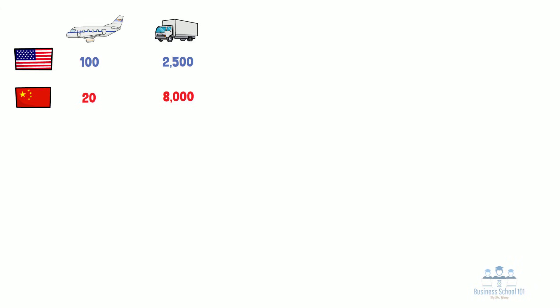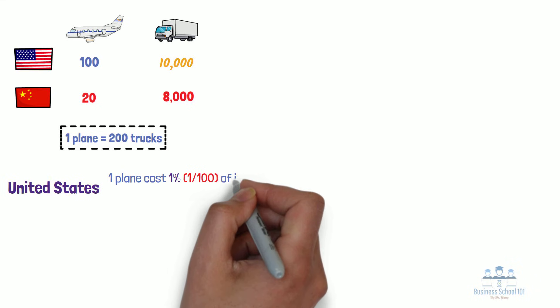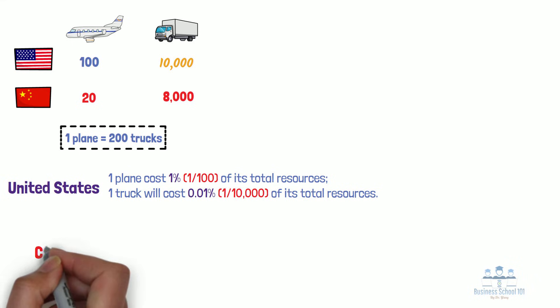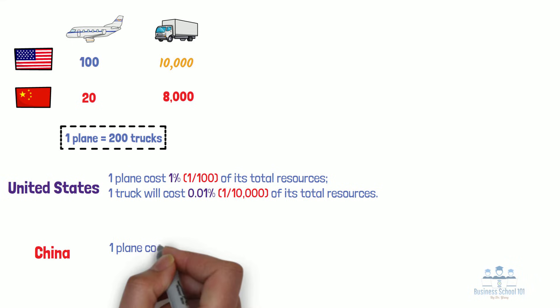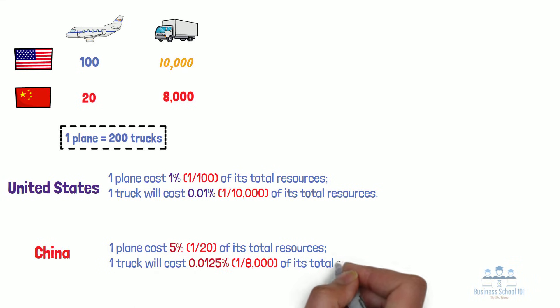Let's use an example to explain. This time, let's assume that there are only two countries, the United States and China, engaging in trade, and that both countries only produce two goods: planes and trucks. China can still produce either 20 planes or 8,000 trucks. However, this time, the United States can either produce 100 planes or 10,000 trucks. In this imaginary international market, one plane can still be traded for 200 trucks. For the United States, the production of one plane will cost 1% of its total resources, while the production of one truck will cost 0.01% of its total resources. Similarly for China, the production of one plane will cost 5% of its total resources, and the production of one truck will cost 0.125% of its total resources.